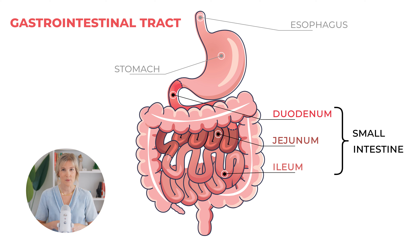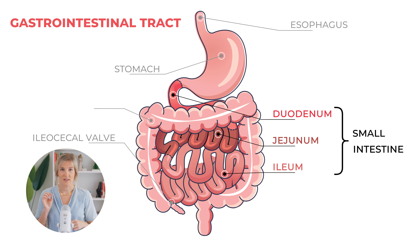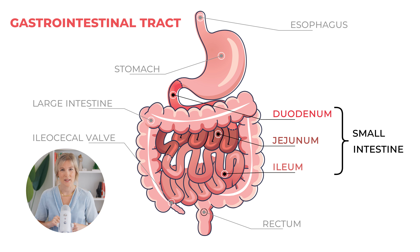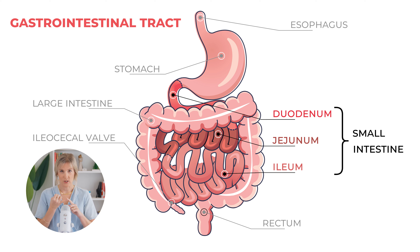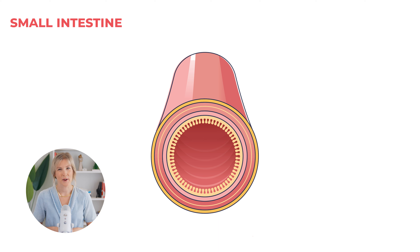After the ileum, we have the ileocecal valve — the valve that separates the small and large intestine. Then we have the large intestine all the way through to the rectum. So just remember that the small intestine is made up of the duodenum, the jejunum, and the ileum.